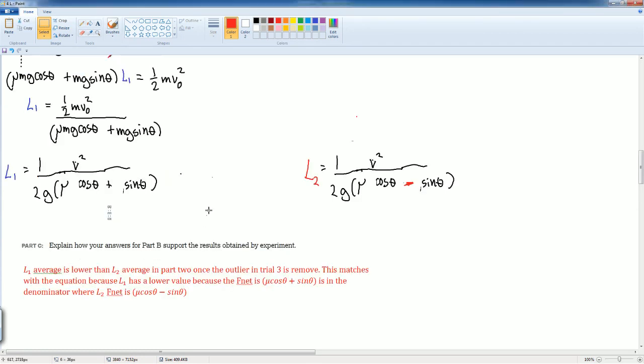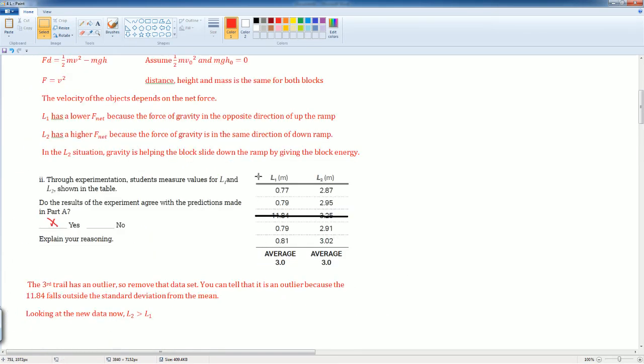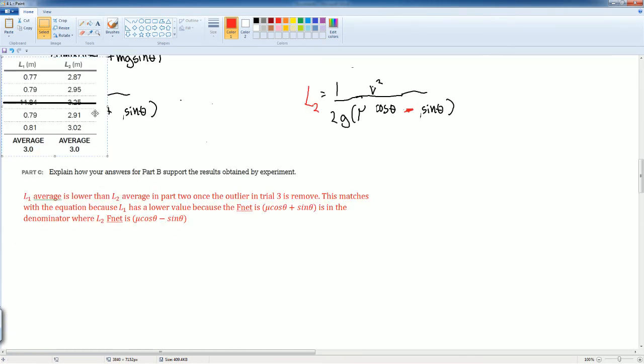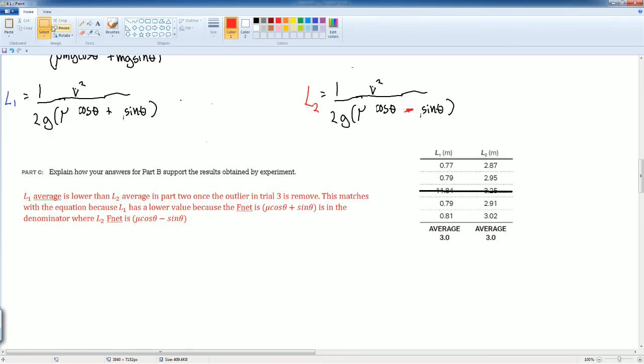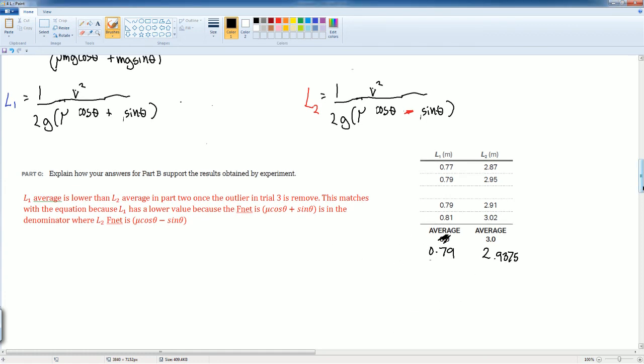So remember, L1's average is lower than L2's average in part 2, once the outlier in trial 3 has been removed. You should see it right here. I can bring it down here to show you. Okay, the new average, if you want to compute it when this disappears, all right, we would see that the L2, let me just do the calculation for you. All right, so I just did the average. I add them and I divide by four because there's four trials. Okay, so notice that the L1's average is smaller than the L2's average. All right, let's see if that makes sense.